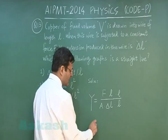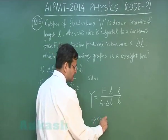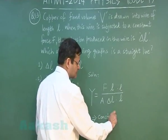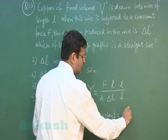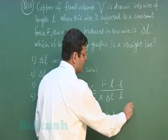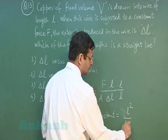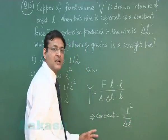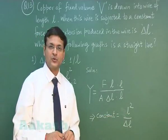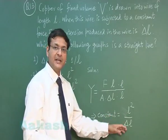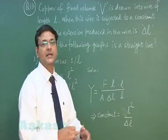So effectively you see something is constant and on the numerator you have L square on the numerator you have L square and in the denominator you have delta L. So delta L is coming out to be directly proportional to L square. So if you plot a graph between delta L and L square then only it will be a straight line.